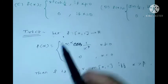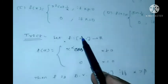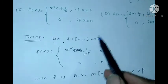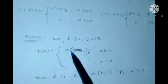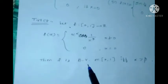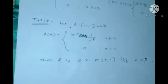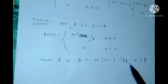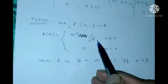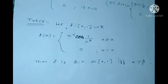The trick is: let f be from the closed interval [0,1] to the reals, where f(x) = x^alpha · cos(1/x^beta) for x≠0 and 0 when x=0. Then f is of bounded variation on [0,1] if and only if alpha is greater than beta.